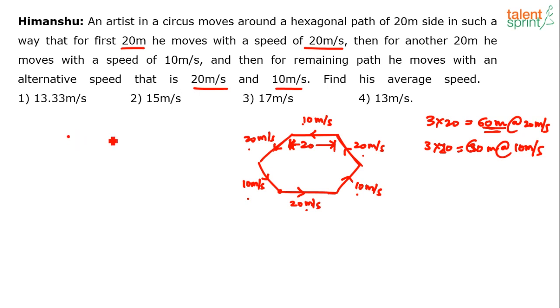You know that when the distance covered is equal, it's like going from point A to point B and then coming back. So let's assume 60 meters is the length. One person goes from A to B at 20 meters per second and goes back from B to A at 10 meters per second. What is the average speed when the total distance covered is equal?